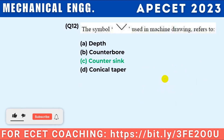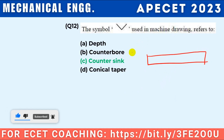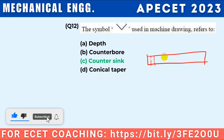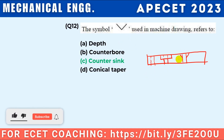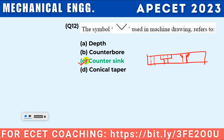The symbol used in machine drawing — if you have a depth and a specific point indicated — that refers to a counter-sink. Your answer is counter-sink.